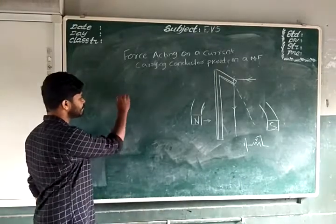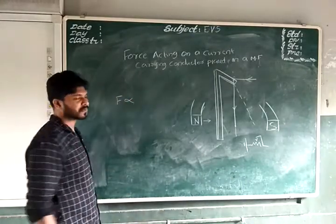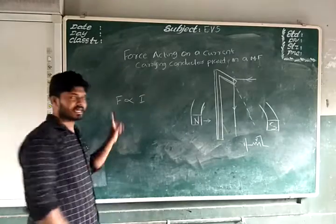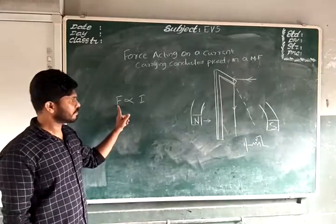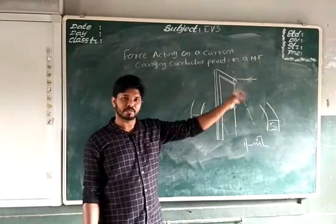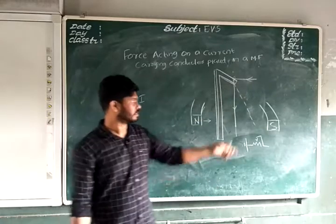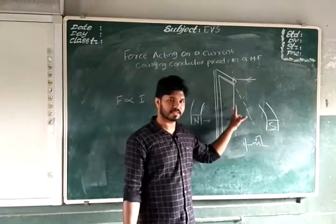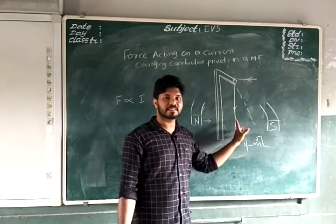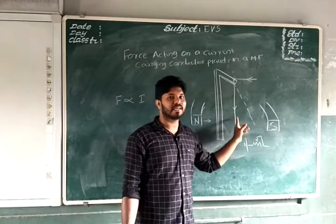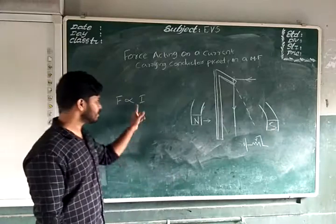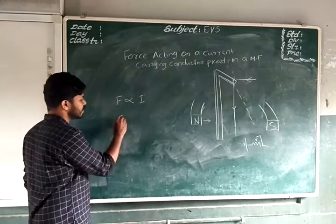So we can write F is directly proportional to I — force experienced by the conductor is directly proportional to the amount of current passing through the conductor. When the amount of current passing through the conductor is increased, its magnetic field also increases and hence it experiences more force. That is the first point.